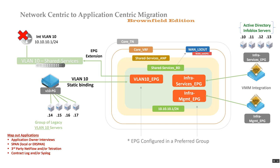I move four virtual machines that provide infrastructure services to the infra services EPG, and I move two other virtual machines — syslog servers and NetFlow collectors, devices used to manage the infrastructure — to the infra management EPG. I categorize them correctly.